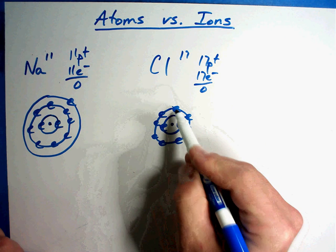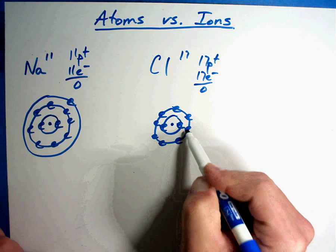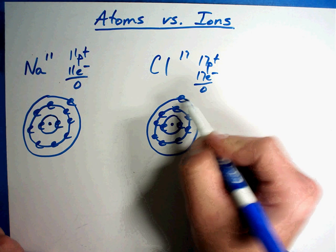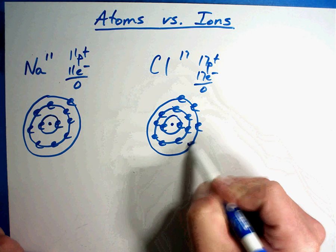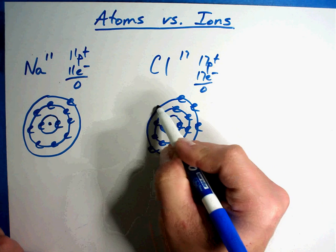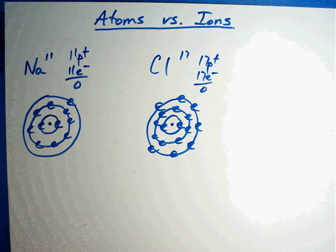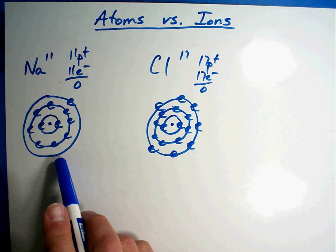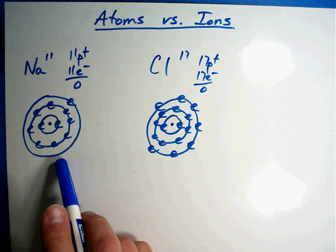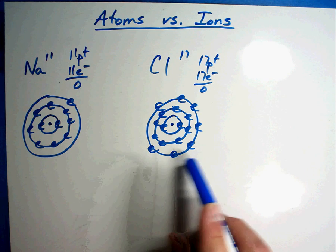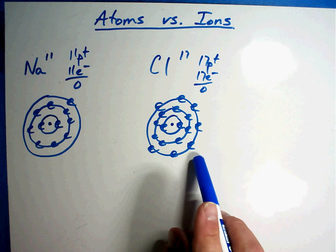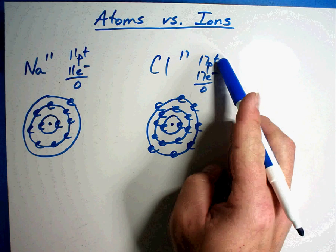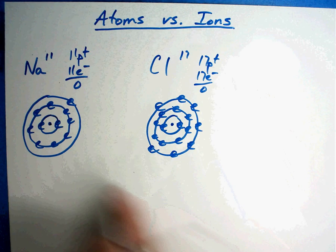Two electrons in the first, 8 in the second. That gives me 7 more. That's what they look like. This is what we did in the last session. Here's what a sodium atom looks like when we draw it. Remember, atoms don't look like this - this is how we draw them on paper so that we understand them. This is a chlorine atom. They're different from each other. 11 protons, 17 protons. Every element has different protons.